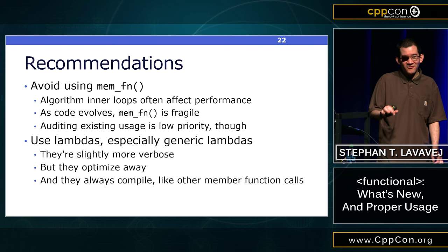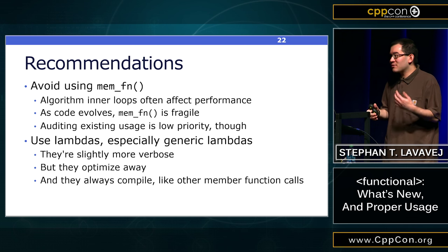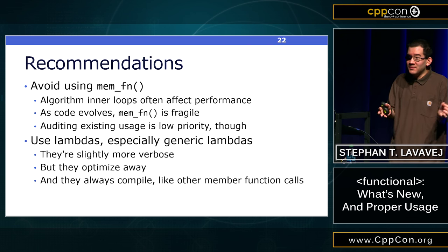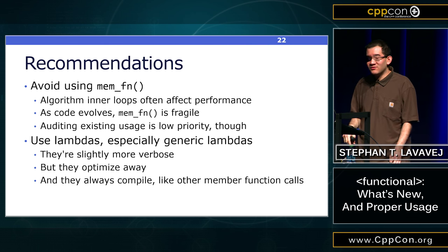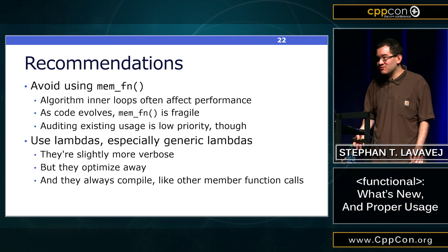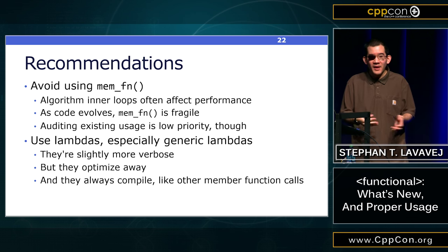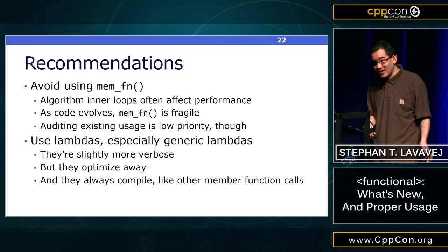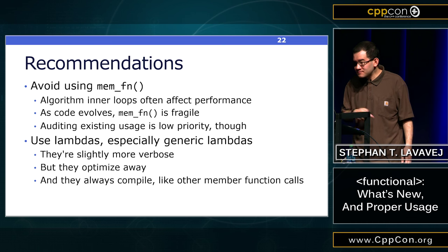My recommendation is to avoid mem_fn. It's not super horrible, but if you're giving a member function to an STL algorithm you probably care about performance — it may be called for every element of a million-element sequence. And it breaks down when code evolves. Now that we have C++11 lambdas and C++14 generic lambdas, what I recommend is writing a lambda to call that member function for you. Yes, it'll be a little more typing, but it's going to optimize away because the body of the lambda is just an ordinary function call operator. The optimizer can see through that and inline it without having to figure out that a data member is always some particular PMF.